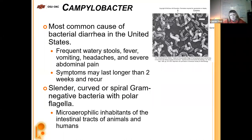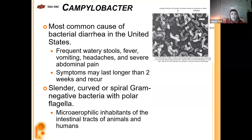Campylobacter is the most common cause of infectious — especially foodborne — diarrhea. It leads to frequent watery stools, fever, vomiting, headaches, and severe abdominal pain; symptoms can last longer than two weeks and can recur. This gram-negative bacteria has a curved or spiral shape with polar flagella at each end. They are microaerophilic inhabitants of the intestinal tracts of animals and humans — meaning they only need very little oxygen to survive.